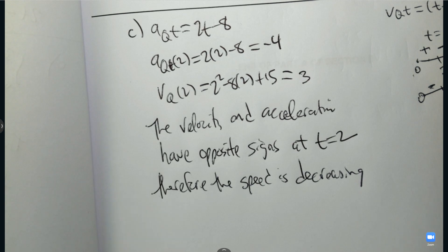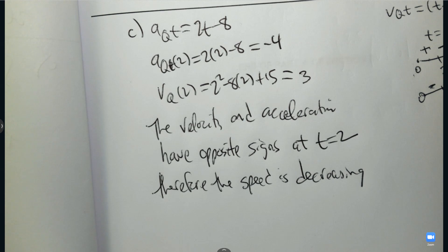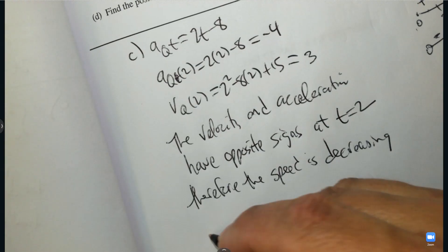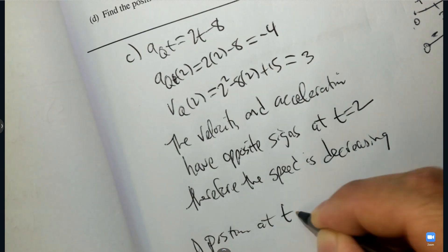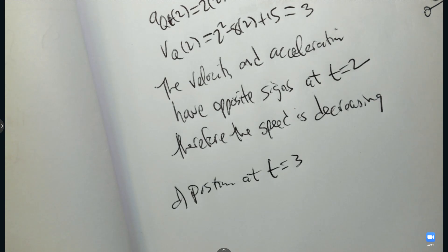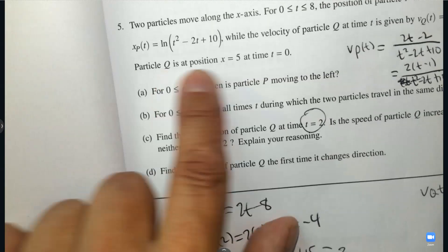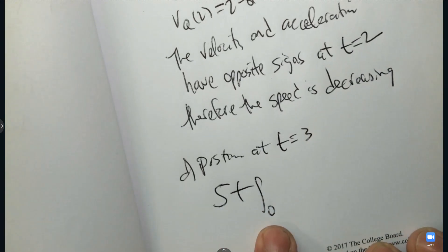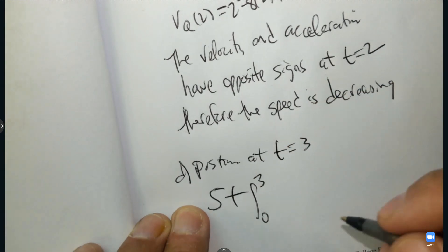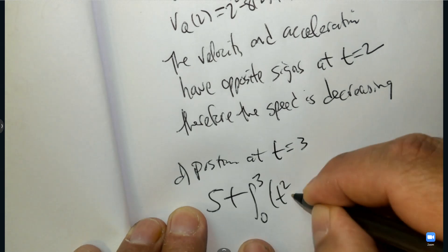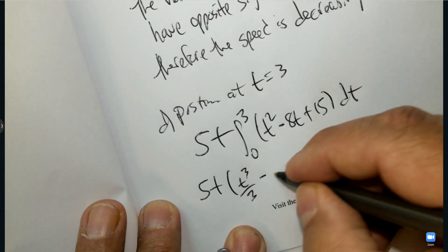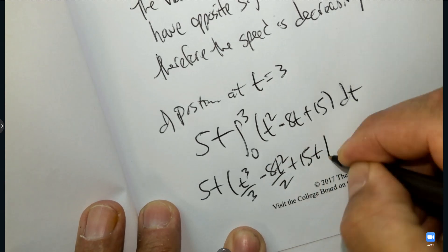All right, last question. Find the position of the particle q the first time it changes direction. So q is here. The first time it changes direction is at what number? 3. So can you find the position at t equals 3? That's what I'm looking for. So what do I know already about q? So the position for q, what does it start at? 5 plus, we're going to integrate. At what time is it 5? 0. And what am I looking for? 3. And then I'm going to integrate the velocity. This is for q, which is t squared minus 8t plus 15. So there's the setup. No calculator. And then how would you do it? So you actually have to integrate this. So that would be add 1 to the exponent and divide. Add 1 to the exponent and divide. And we're going from 0 to 3. We don't have to simplify here just to remind you about that.